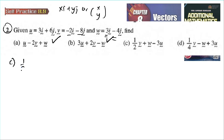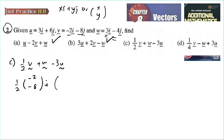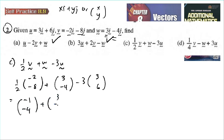For part c: half v plus w minus 3u. Half of v — v is (negative 2, negative 8) — so we divide by 2: negative 2 divided by 2 gives negative 1, negative 8 divided by 2 gives negative 4. Plus w which is (3, negative 4), minus 3 times u which is (3, 6), so 3 times 3 is 9 and 3 times 6 is 18.